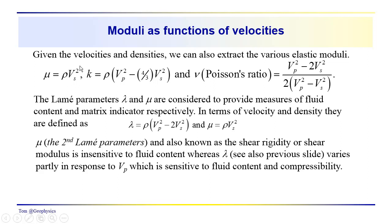Typically when you log a well, you record information about the density, the shear wave velocity, and the compressional wave velocity. It's quite common to get compressional wave velocity, and increasingly common to also record the shear wave velocity. When we have these velocities, we can calculate the different moduli. The shear rigidity mu equals the bulk density times the square of the shear wave velocity. The bulk modulus equals the bulk density times the square of the compressional wave velocity minus four-thirds the square of the shear wave velocity.